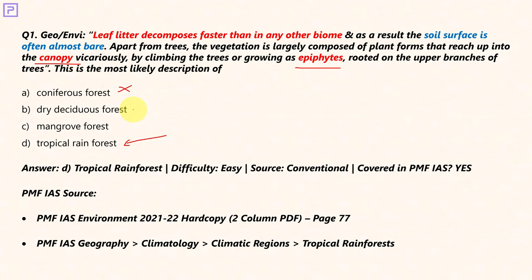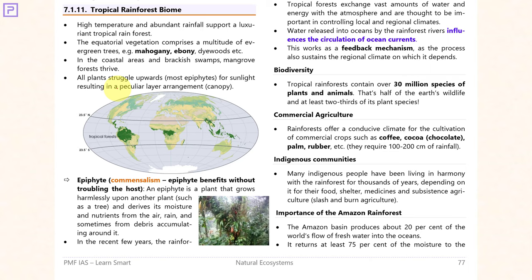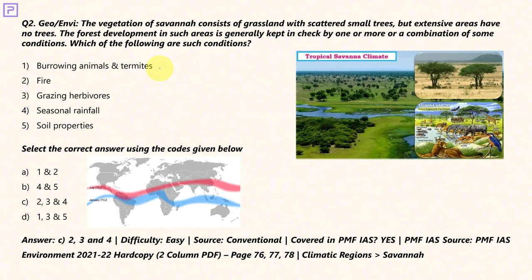In dry deciduous forests, there is a distinct dry and wet season. In the dry season, the dry litter doesn't decompose because of lack of humidity. In mangrove forests, we don't really have a soil surface because mangrove forests lie in the intertidal zone. This concept — epiphytes and canopy — is mentioned in both our geography and environment notes, and can be found on page 77 of the newly launched environment hard copy.